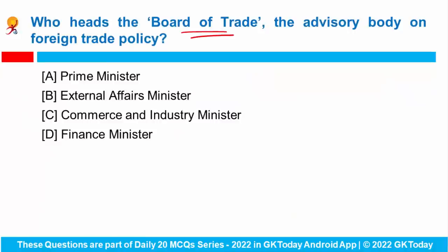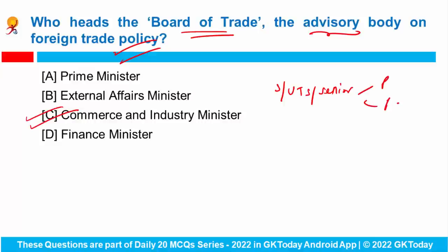Who heads the Board of Trade, the advisory body on foreign trade policy? The Board of Trade is headed by the Commerce and Industry Minister and includes participants from states, union territories, and senior officials from the public and private sectors. The government has nominated 29 non-official members from different sectors including large and small enterprises on the Board of Trade.